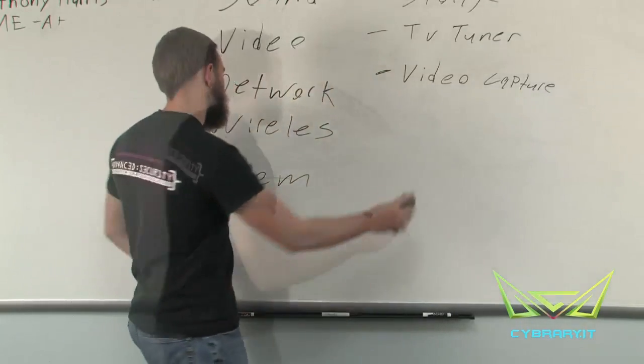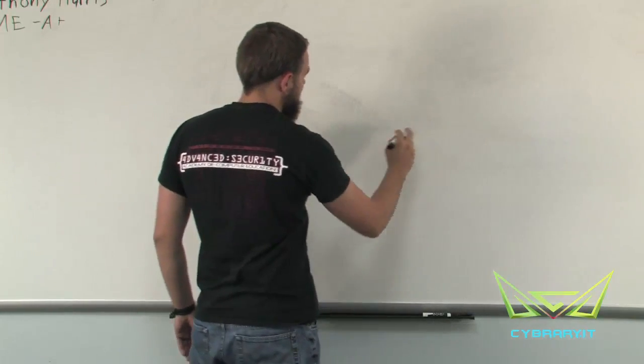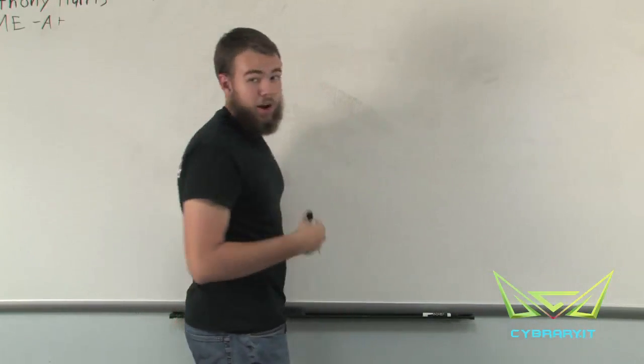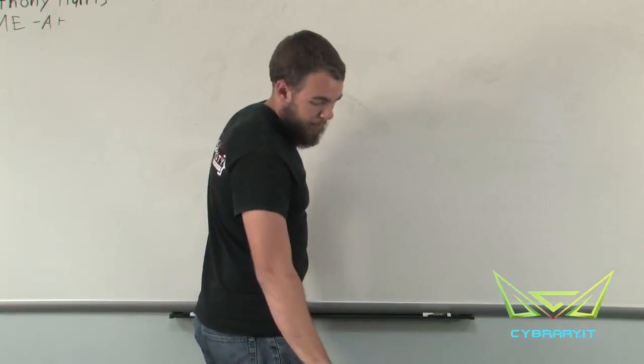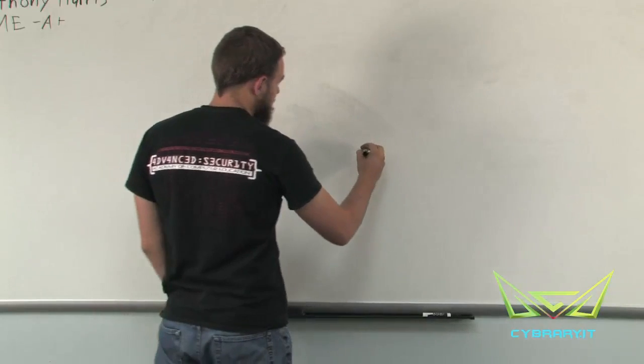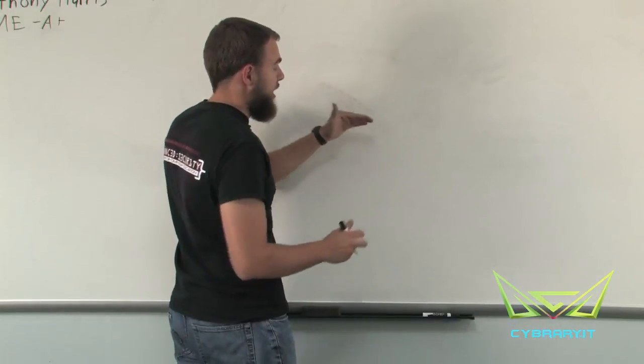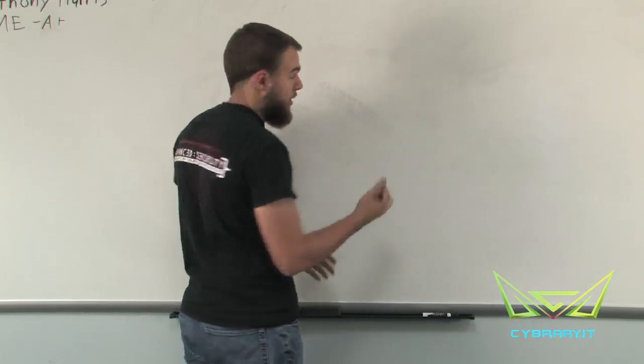Let's go ahead and draw a little diagram. Our computer works at several different layers. This wireless card is a piece of hardware, so it's something we can physically touch. It works at our bottom layer here, so we'll just call this our hardware layer.